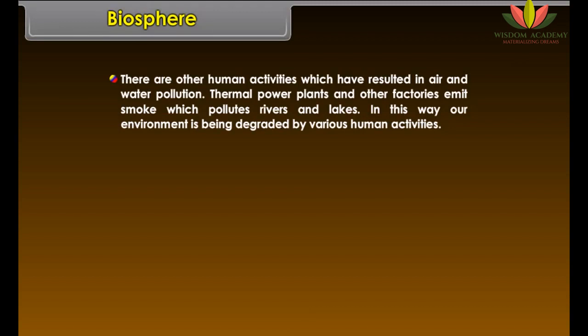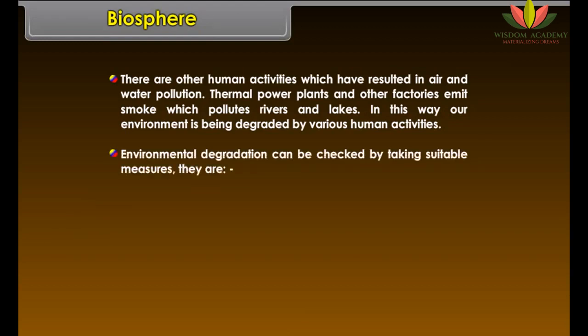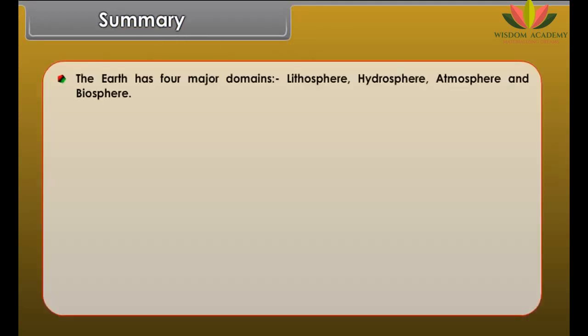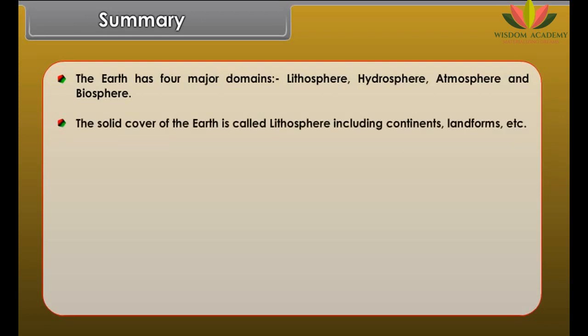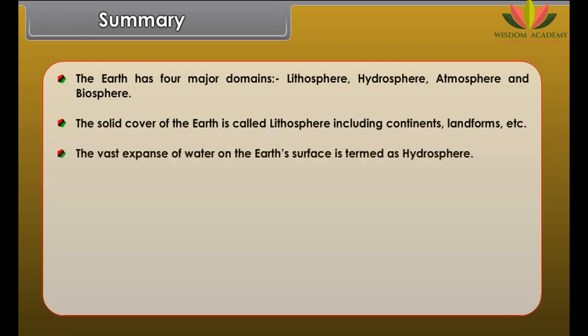The earth provides a suitable environment for human beings to live. We grow our food from the land, which also provides us with a variety of minerals. We build our shelter on the surface of the earth. Rivers and other water bodies provide water for our requirements. River water is also used for generation of hydroelectricity. Plants and animals provide us food and raw material for our industries.